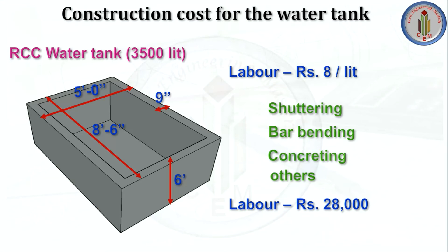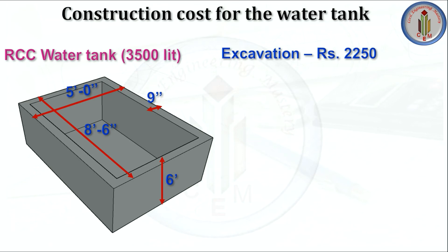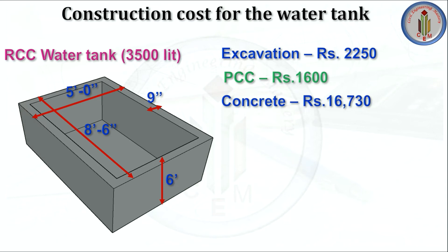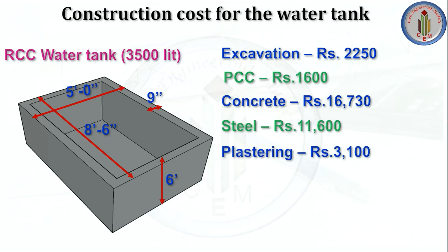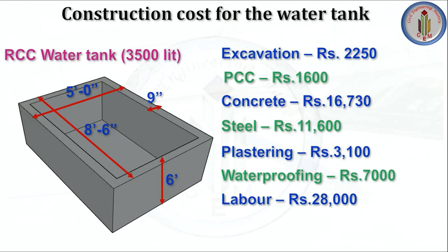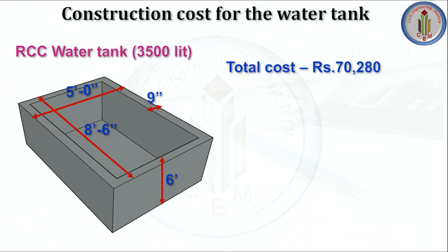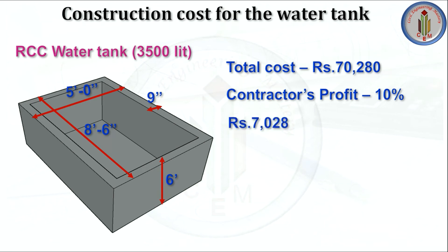Compiling all costs: excavation 2250 rupees, PCC 1600 rupees, concrete 16,730 rupees, steel 11,600 rupees, plastering 3100 rupees, waterproofing 7000 rupees, labor 28,000 rupees — total cost is approximately 70,280 rupees. Adding a contractor's profit of 10 percent, which is 7028 rupees, the final total cost of construction is 77,308 rupees for a 3500-liter underground sump.